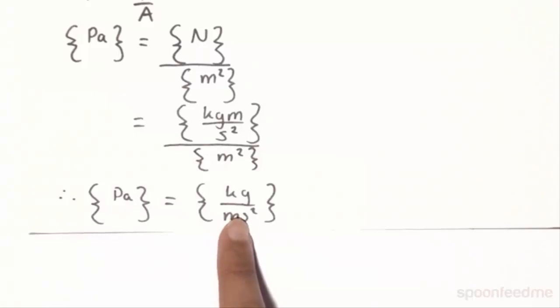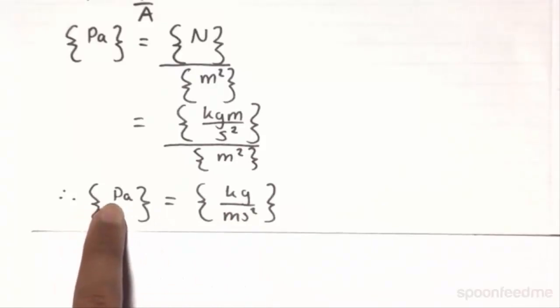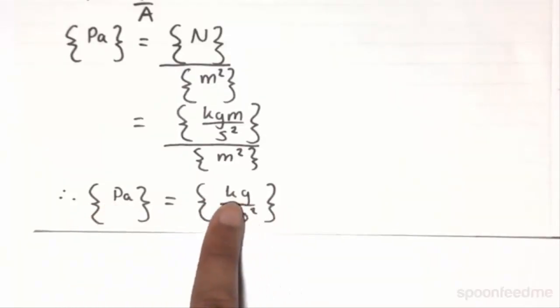So essentially, if you wanted 50 pascals, you can do 50 pascals and denote it that way, which is the easy way. Or if you really wanted to, you could do 50 kilograms per meter per second squared.